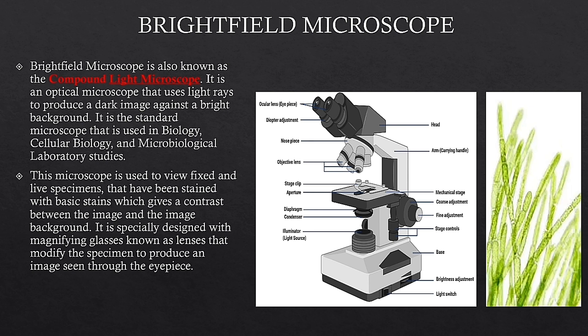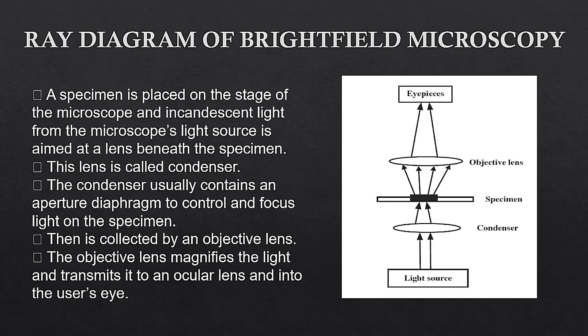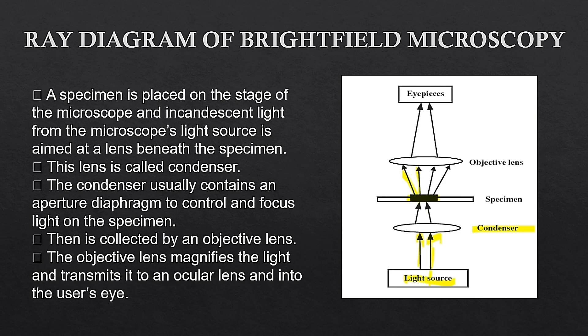Moving to the next slide — the ray diagram of the bright field microscope. In this diagram we will talk about the light source. The light source is the condenser. The condenser's work is to condense all the light and direct it to our specimen, so all the light from the source reaches the specimen. Now here is our object which we have to see in the microscope.